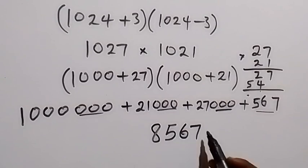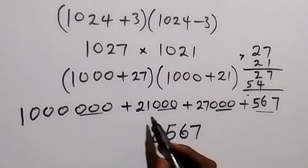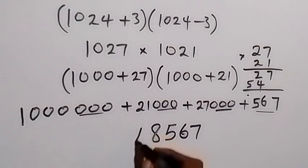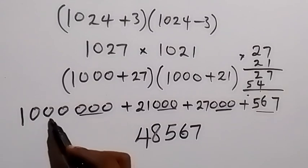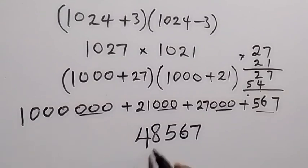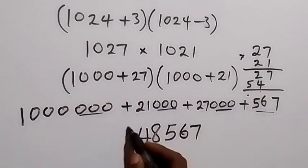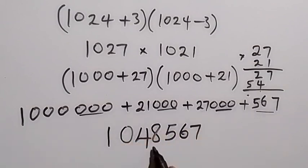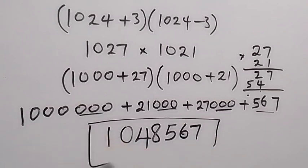Then the next digit, we have 2 plus 2, which gives us 4. The rest we have taken care of. When we add it all together, we get 1,048,567 as the simplified form of that expression.